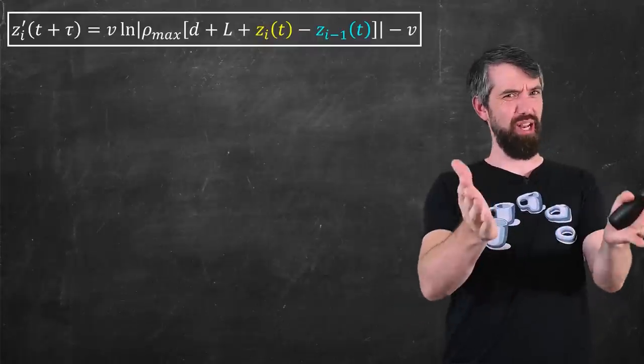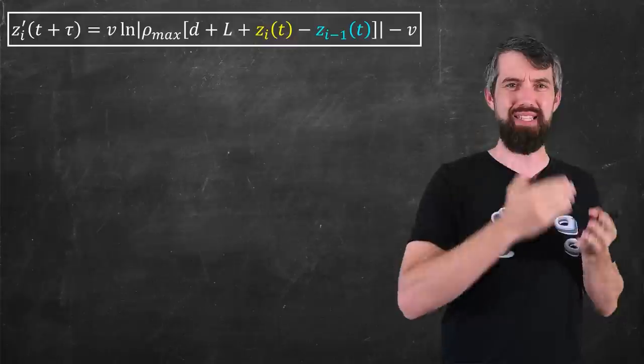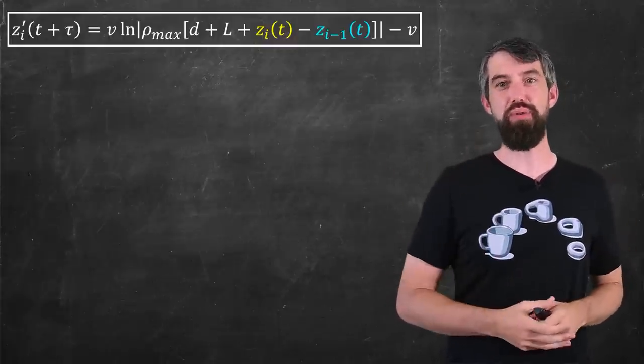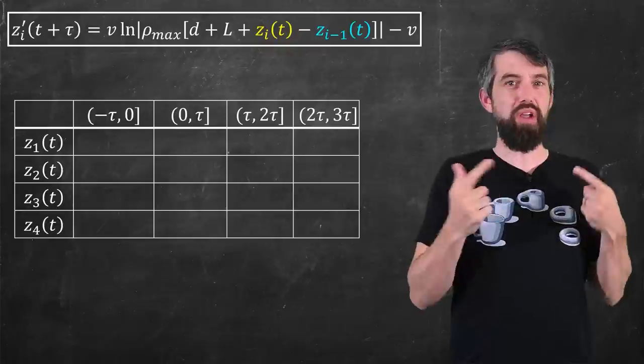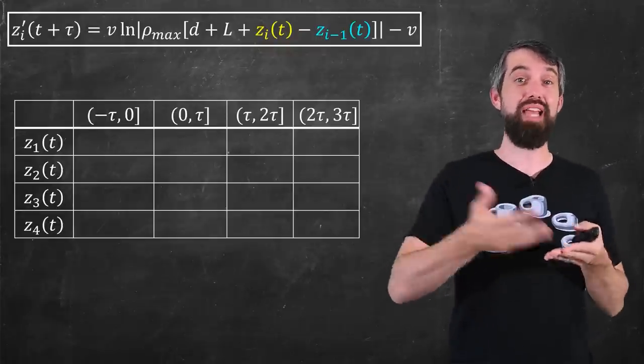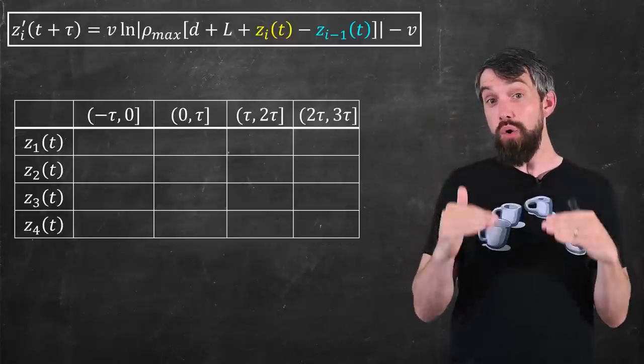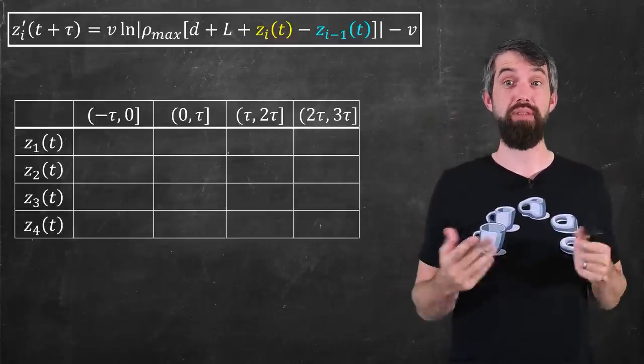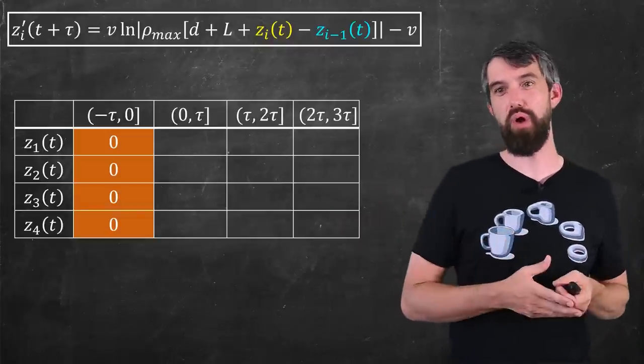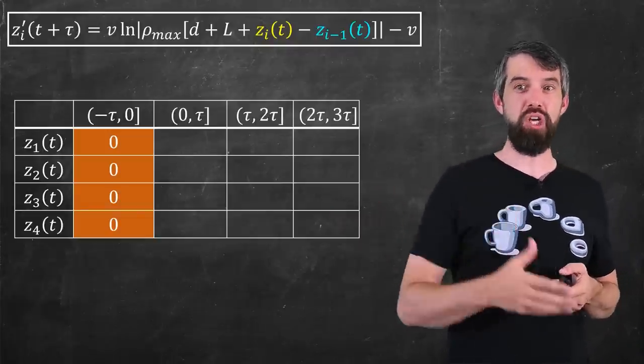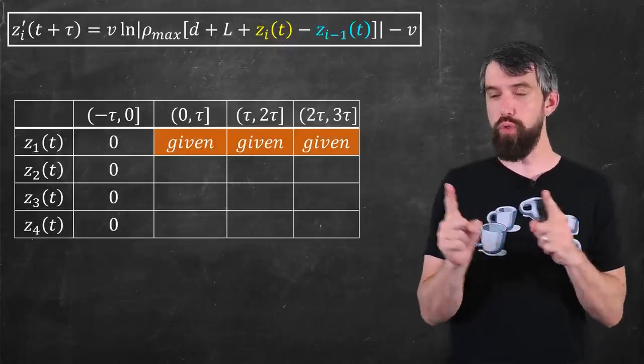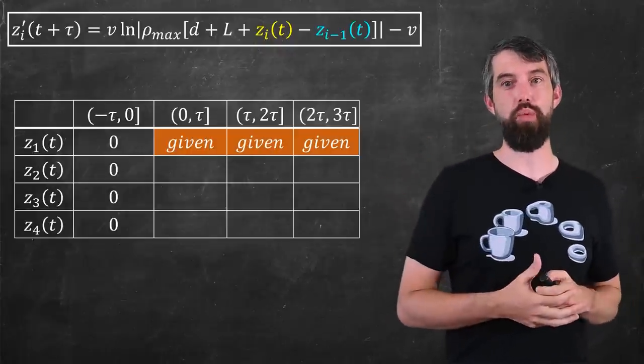The final thing I really want to do is just share a little bit about how to solve a system of differential delay equations. They're just really cool. So what I really want to do is come up with a bit of a matrix, where on the columns I have different time intervals: minus τ to 0, 0 to τ, τ to 2τ, and so on. And then on the rows I have the different cars and their displacements. So for example, when time was negative, we're just saying there's no displacement for all of them. And then for the first car, we're saying it's given by just some function. Could be the one I chose.